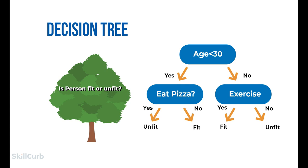Let's take an example: the problem is whether a person is fit or unfit. Starting at the root node, we check the age feature — greater than or less than 30. If yes, we reach an internal node asking 'eat pizza?' If no, we reach an internal node asking 'exercise?' In each case, the answer is yes or no, and according to that we determine whether the person is fit or unfit.